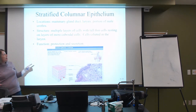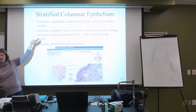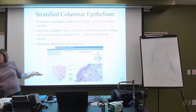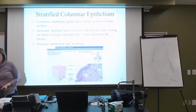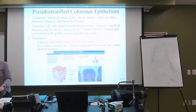Stratified columnar epithelium's function is protection and secretion, because of the areas where they are found. For example, mammary glands — the only time those should be productive is at the time of birth and after, so this is not something that needs to be productive all the time.